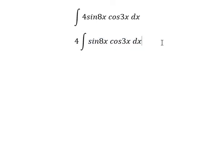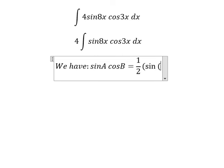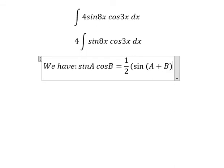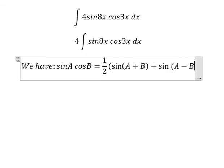We have sine A cosine B equals 1 over 2 times sine of A plus B plus sine of A minus B.